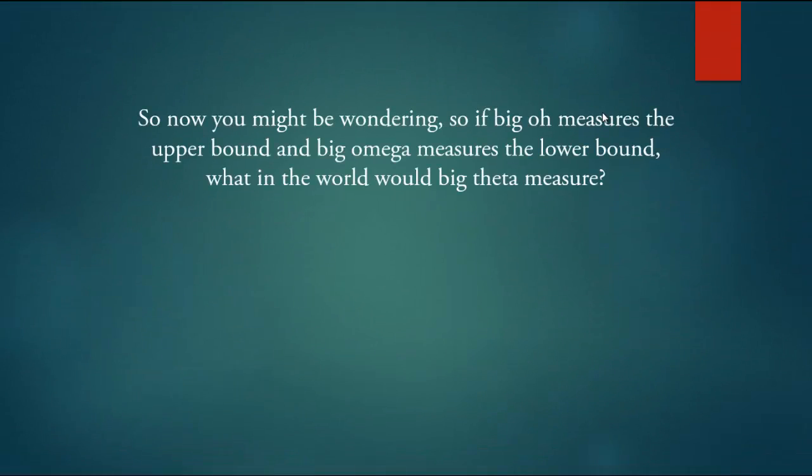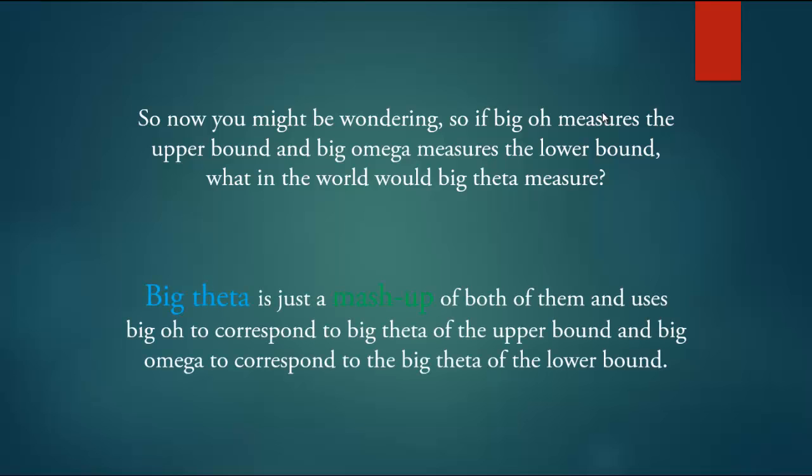So now you might be wondering, so if big O measures the upper bound and big omega measures the lower bound, what in the world would the big theta measure? Big theta is just a mashup of both of them and uses big O to correspond to big theta of the upper bound and big omega to correspond to the big theta of the lower bound. That is absolutely it.